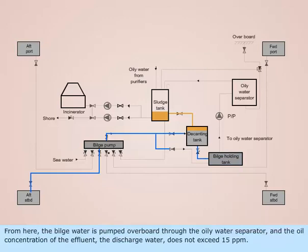From here, the bilge water is pumped overboard through the oily water separator and the oil concentration of the effluent discharge water does not exceed 15 ppm.